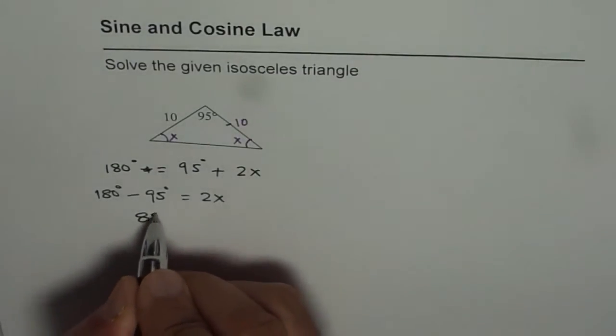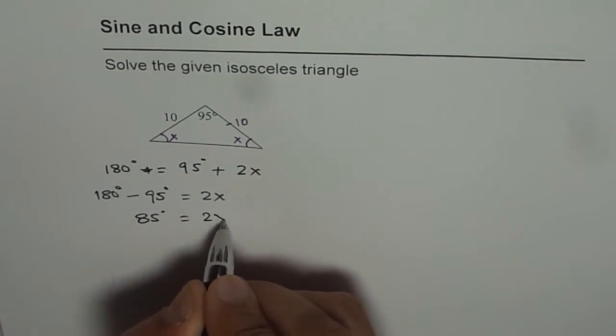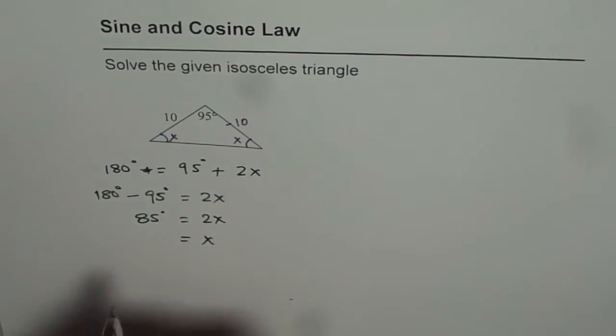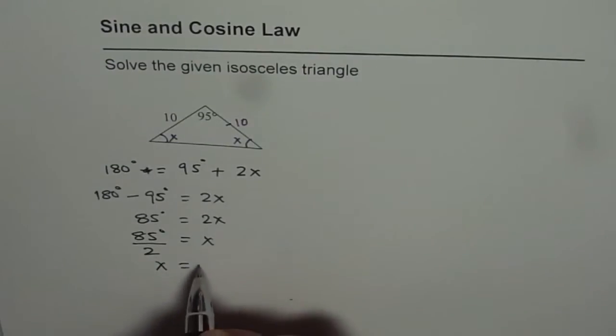So we have 85 degrees equals 2x and therefore x equals 85 degrees divided by 2. So let's divide this by 2. We get 42.5 and we get our angle which is x equals 42.5 degrees.